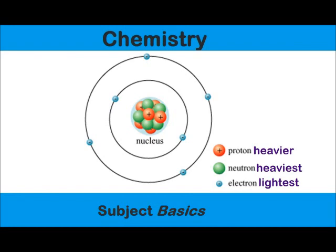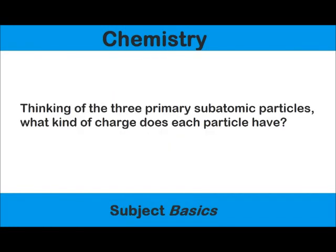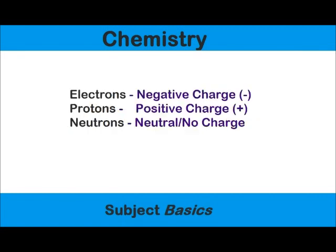Thinking of the three primary subatomic particles again, what kind of a charge does each particle have? If you stated that electrons have a negative charge, protons have a positive charge, and neutrons are neutral in charge, then you would be correct.